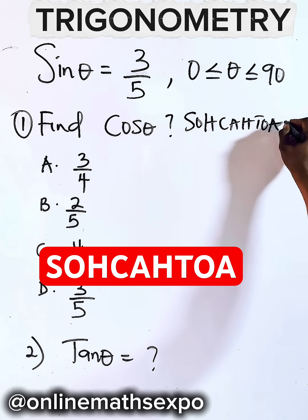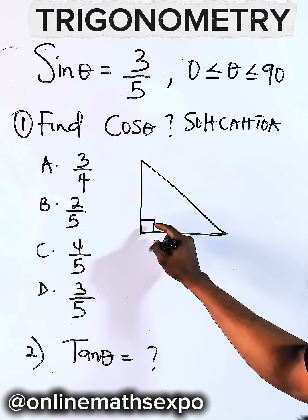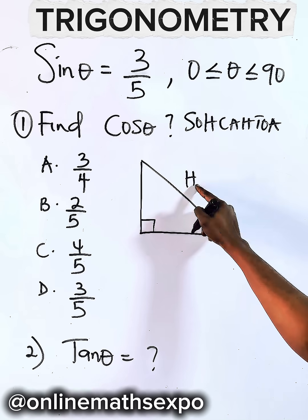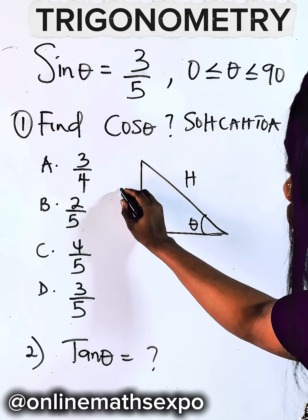Now, what do you do next? Draw your right triangle. Your angle 90 is here. The side opposite to this angle 90 is your hypotenuse. If the angle is formed here, the side opposite to the angle becomes your opposite.